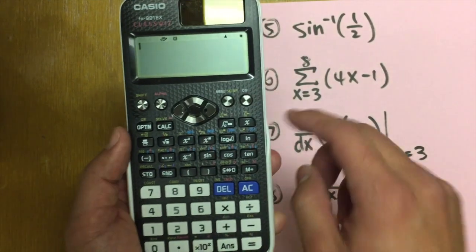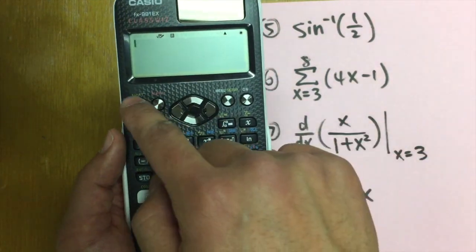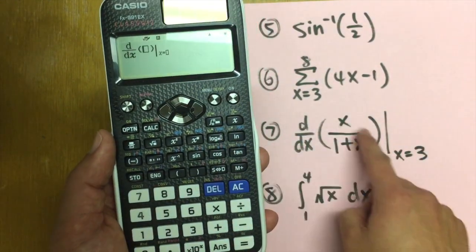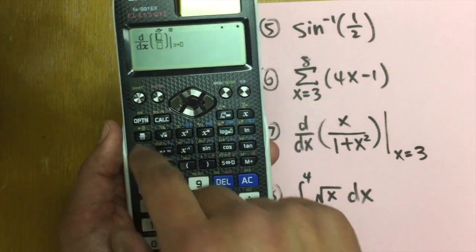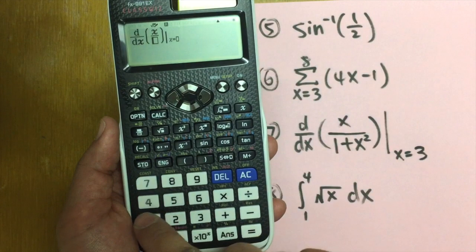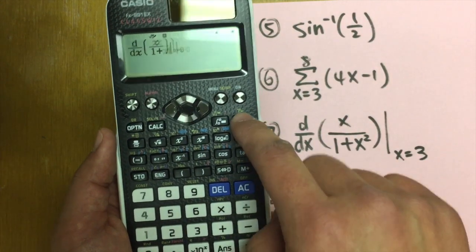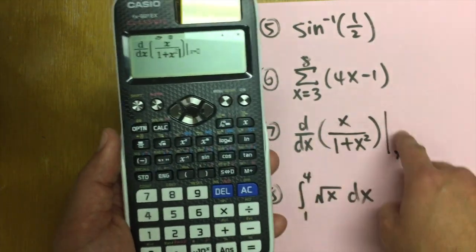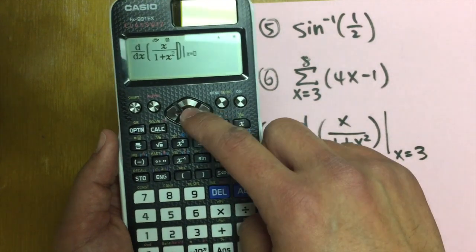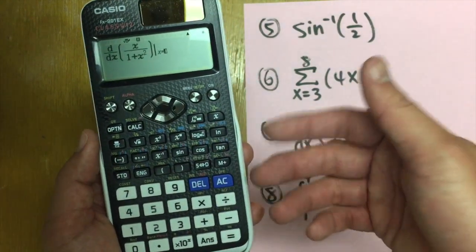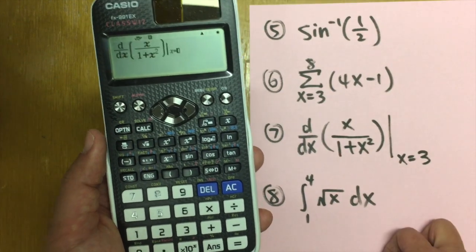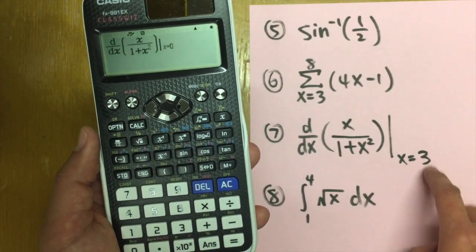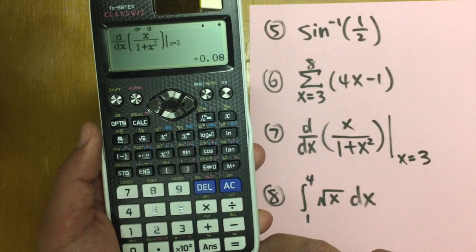For the derivative, it's right here in yellow again. So shift and derivative. Inside, we have rational function. So press the fraction key. And we have x over 1 plus x squared. And we have to give the x value. Unfortunately, the calculator cannot give you the expression for the derivative. It can only give you the value of the derivative. And you have to enter the x value. In this case, let's say x is equal to three. And this is what we have.